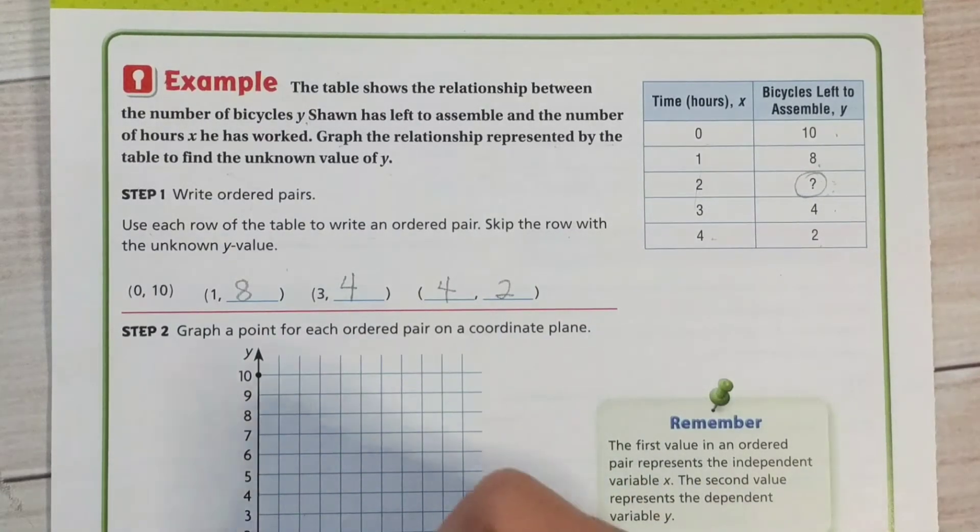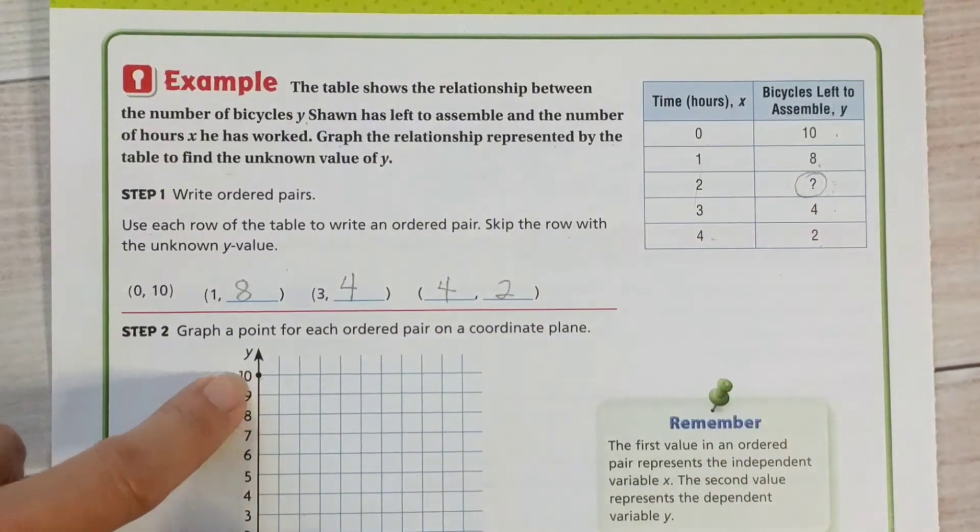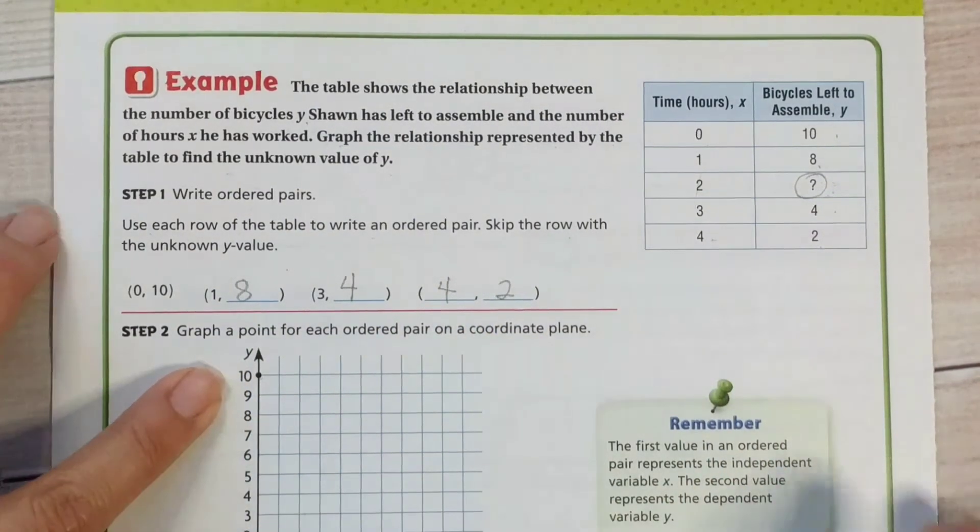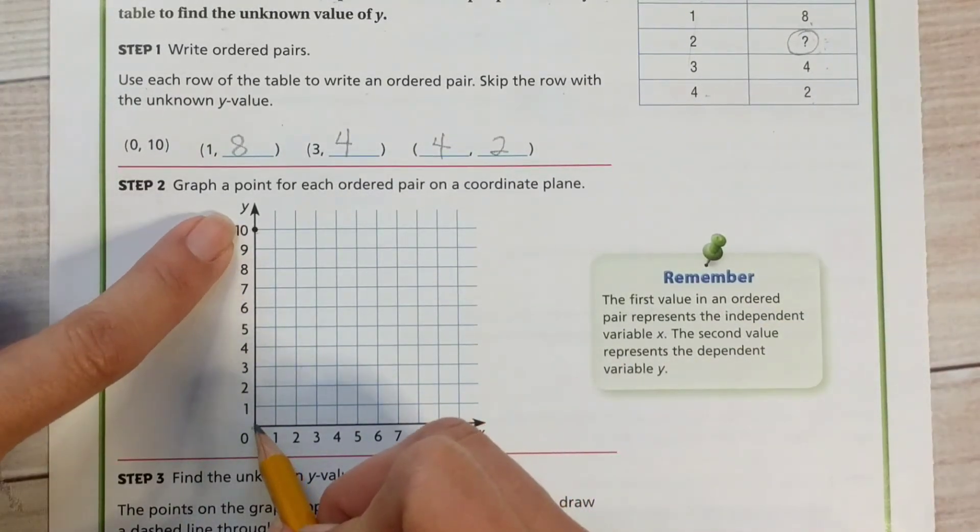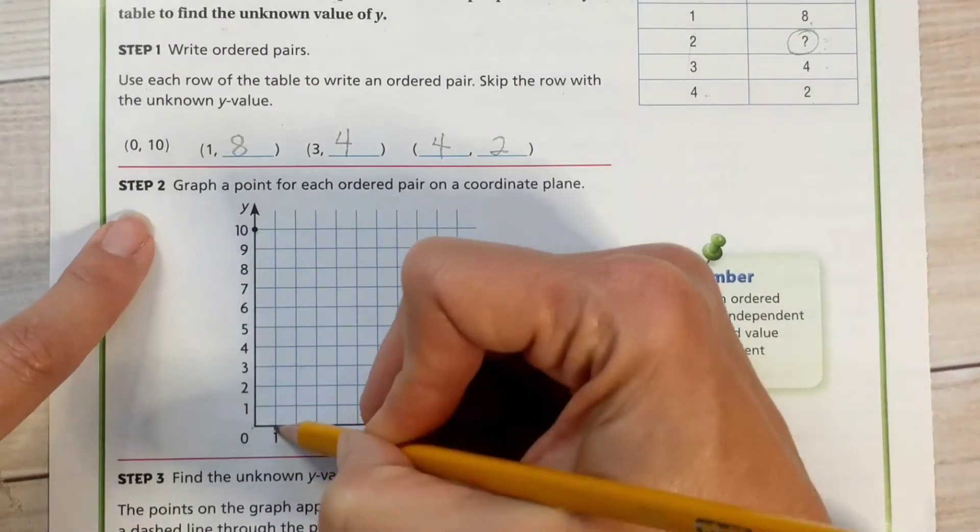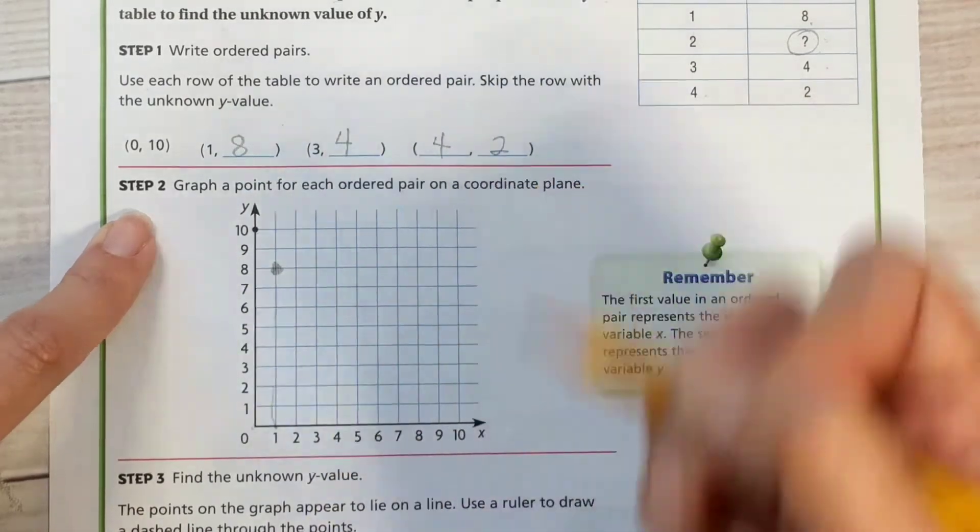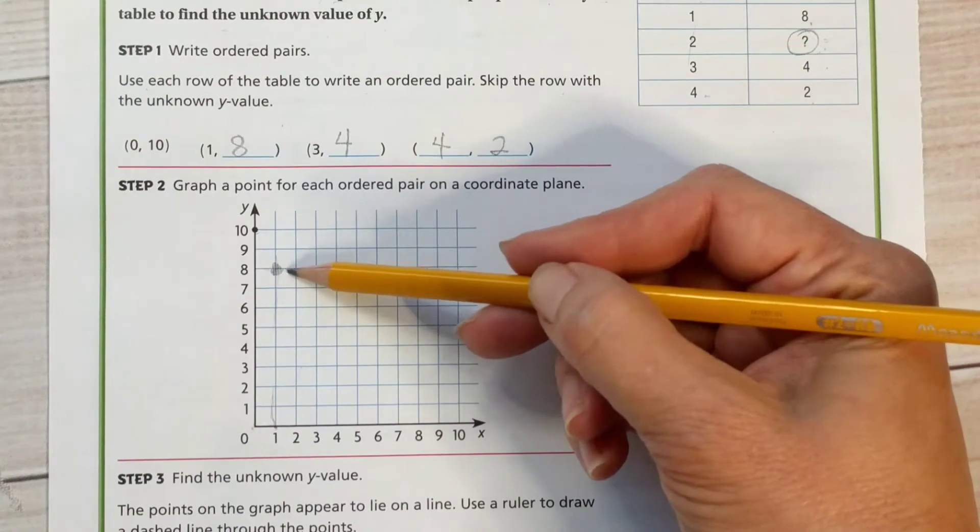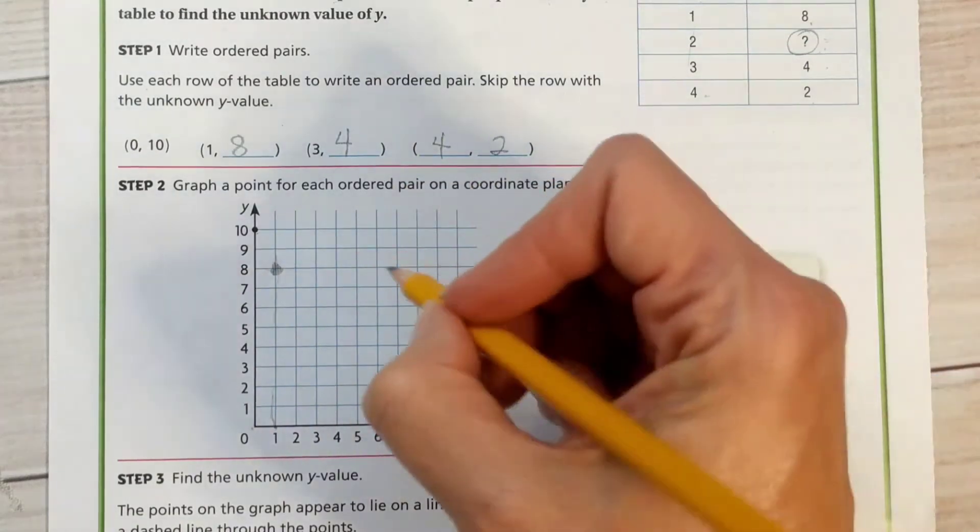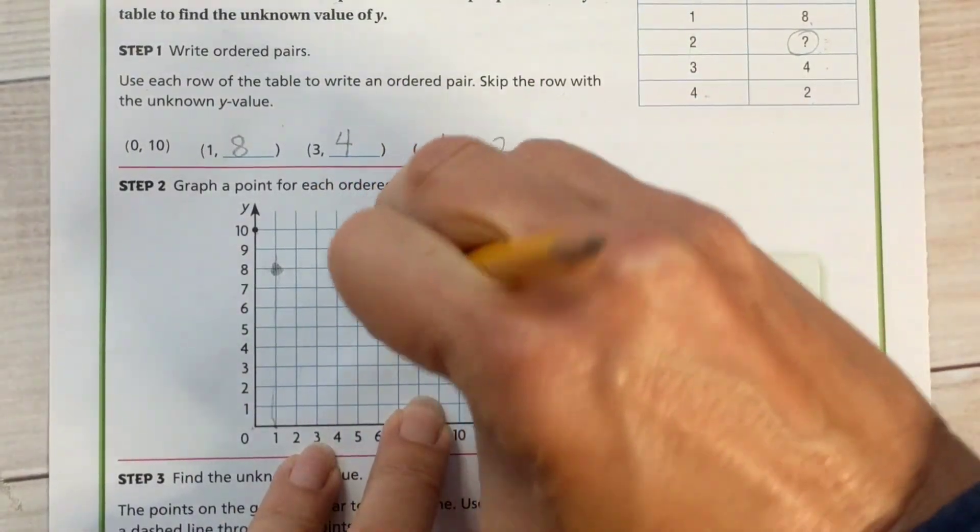So we have 0, 10. They did that one for us. 0, 10. Whoops, I'm not on the screen. Okay, 0, 10. Alright, our next one is 1, 8. So 1, 8. Notice that my dots are at a conjunction of two lines. They're not floating out here in the middle of a space. Okay, that's where two lines intersect.